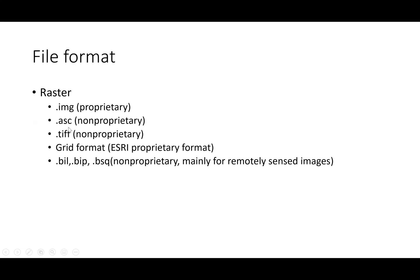ASCII is a text file that gives you the number of rows and columns and a value for each cell. The next non-proprietary format is .TIFF, which can be used in any application. Grid format is proprietary to ESRI's ArcGIS — if you create a raster in grid format, you can only open it in ArcGIS. Non-proprietary formats .BIL, .BIP, and .BSQ are mostly used for remotely sensed images.